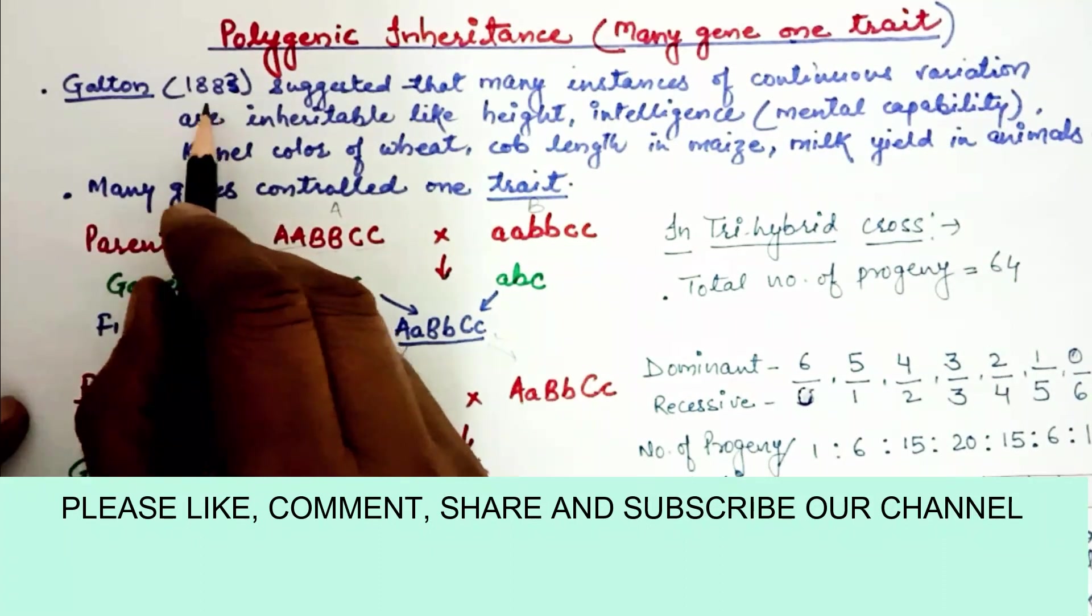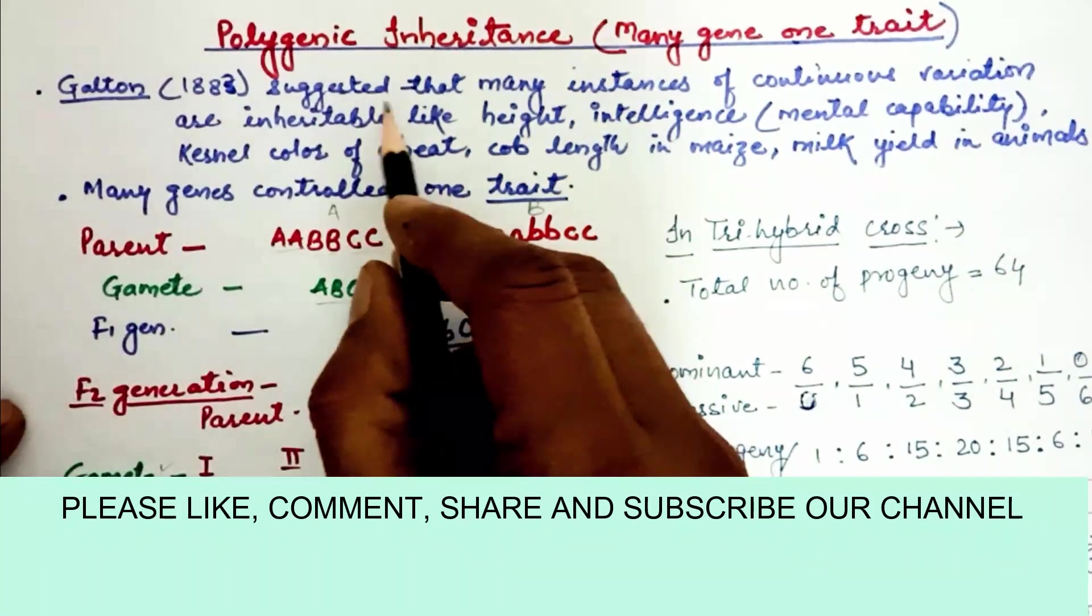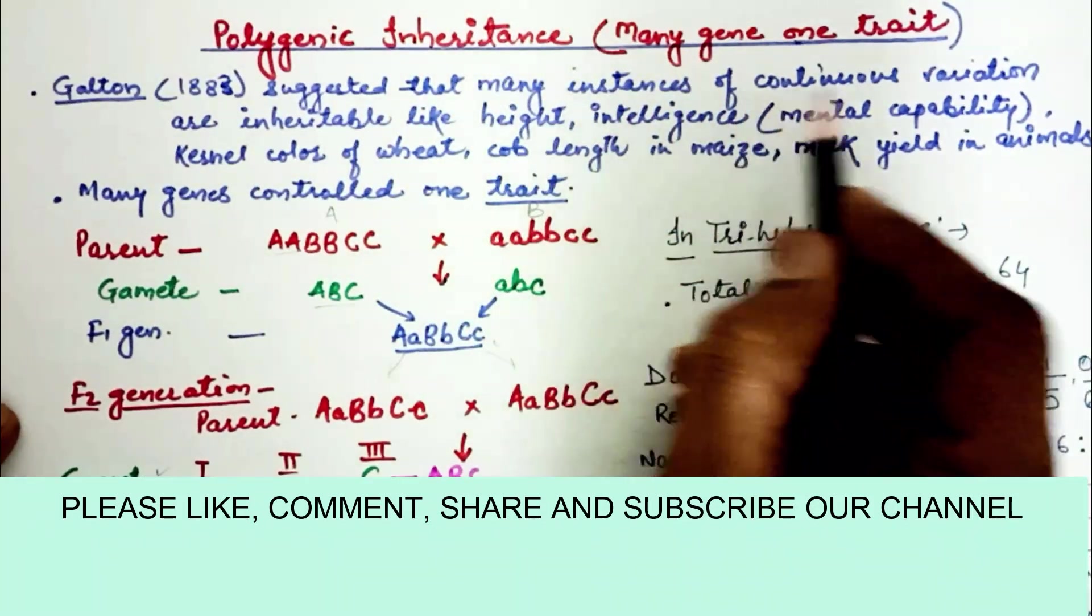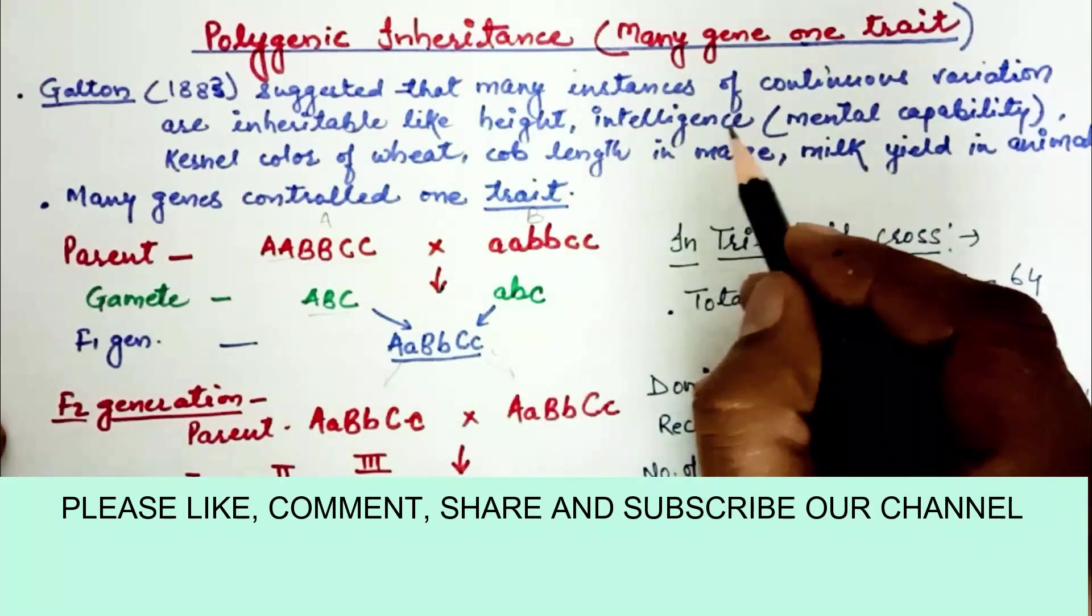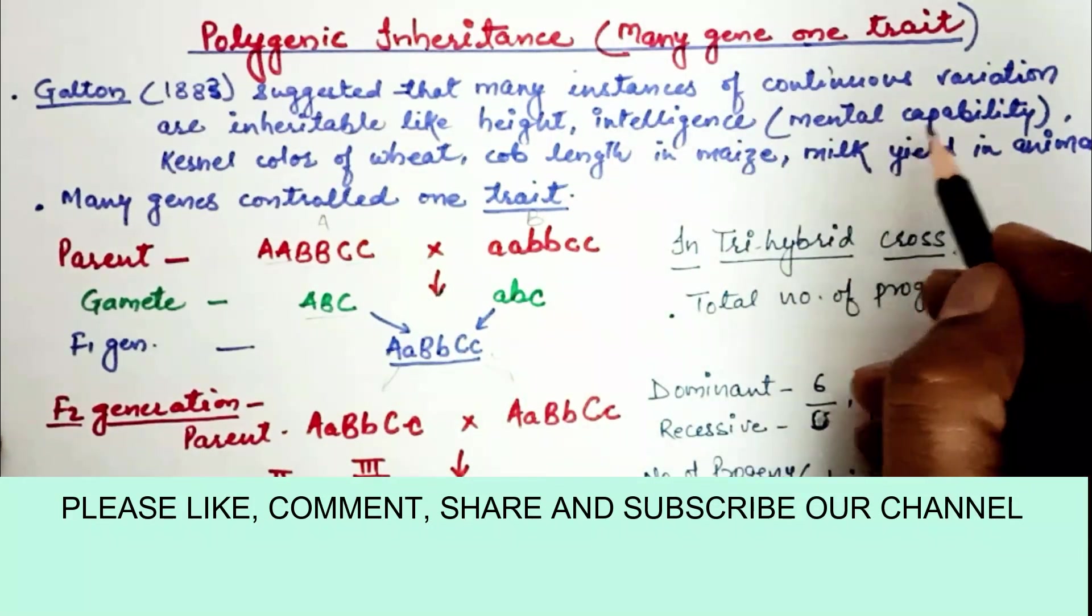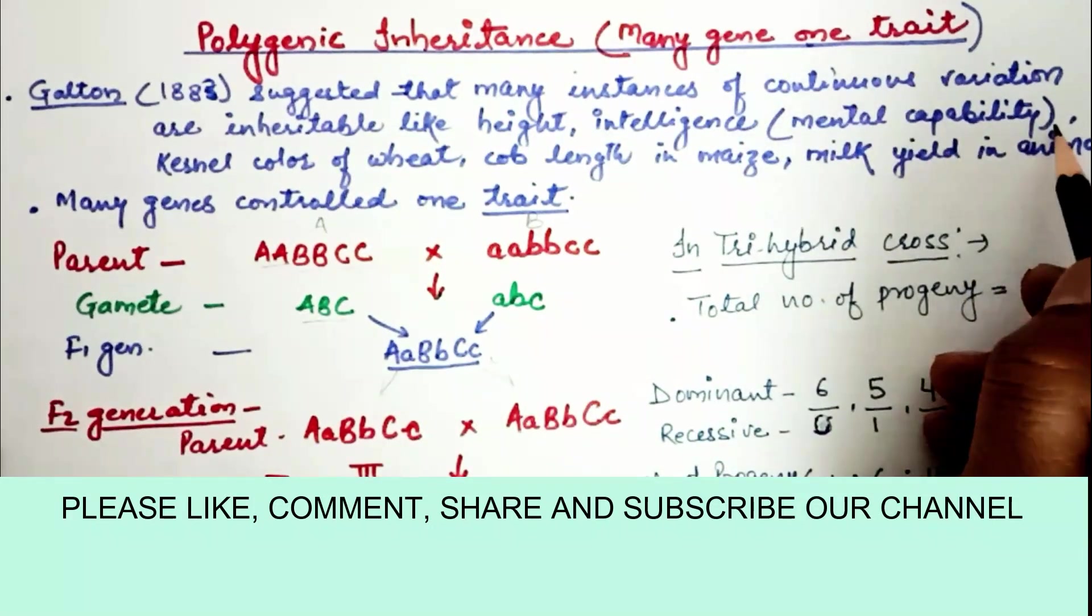According to Galton in 1883, he suggested that many instances of continuous variation are inheritable, like height, intelligence, and mental capability.